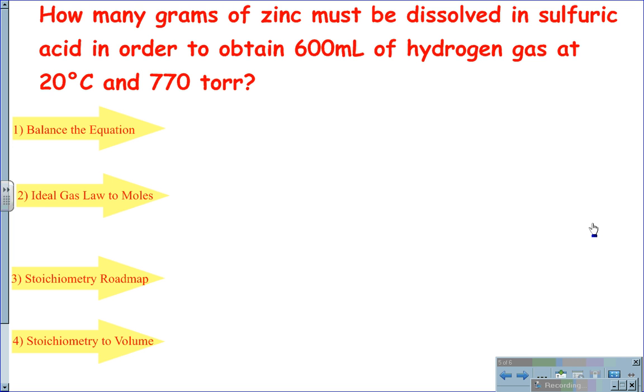For the problem, how many grams of zinc must be dissolved in sulfuric acid in order to obtain 600 milliliters of hydrogen gas at 20 degrees Celsius and 770 torr? We again begin by writing out a balanced chemical equation. In this case, zinc combines with sulfuric acid H2SO4 to create zinc sulfate and hydrogen gas. In this case, the mole values for the coefficients are all equal to 1.